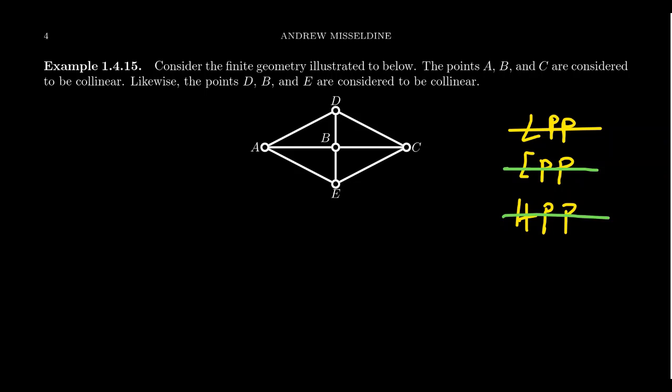And so I want you to notice what happened here. When I looked at this line at this point, it looked Euclidean. But when I looked at this line at this point, it looked elliptic. All the lines intersect.